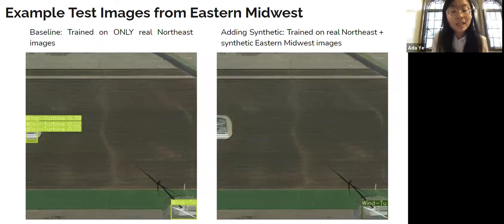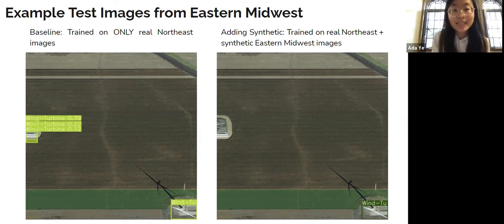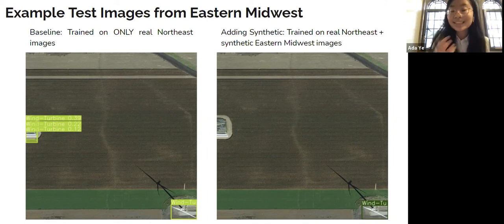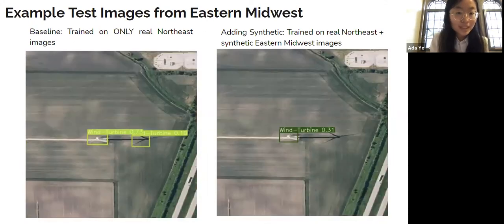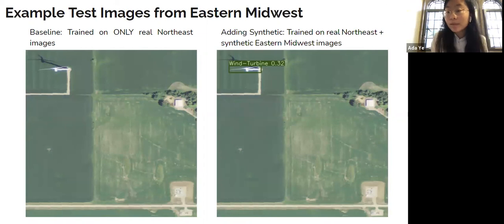Here are some example test images from the Eastern Midwest. The baseline model is trained with only real Northeast images. The adding-synthetic model is trained with real Northeast images and synthetic Eastern Midwest images and tested on Eastern Midwest. On the left, there is an architecture which is not a wind turbine, but the baseline model thinks there are three wind turbines there, while the adding-synthetic model hasn't made this mistake. In another case, the baseline model thinks the shadow of the wind turbine is the wind turbine, while the adding-synthetic model did not make this mistake. In a third case, the adding-synthetic model is able to detect a wind turbine in the upper left corner, while the baseline model is not.